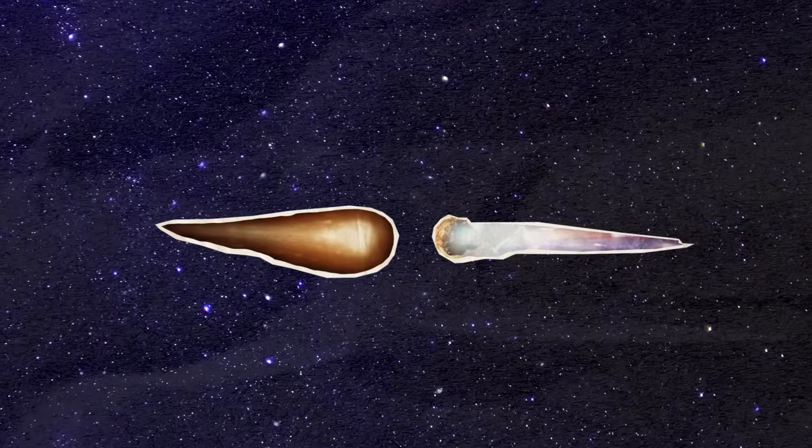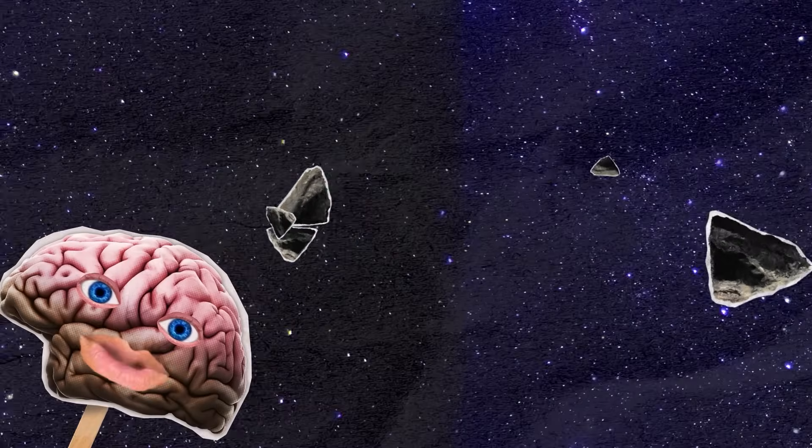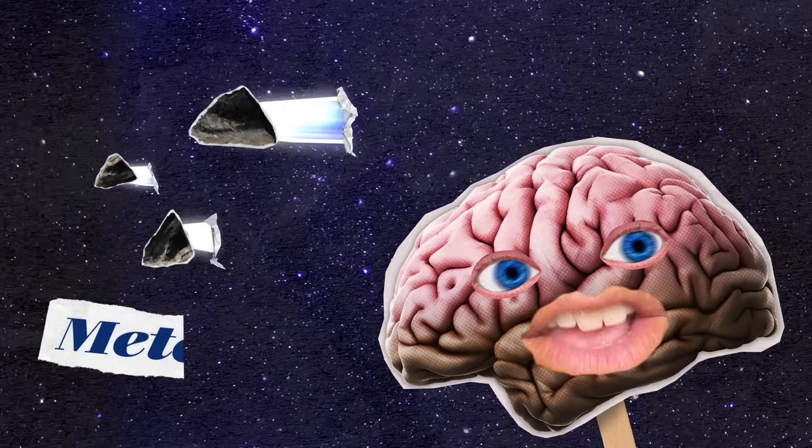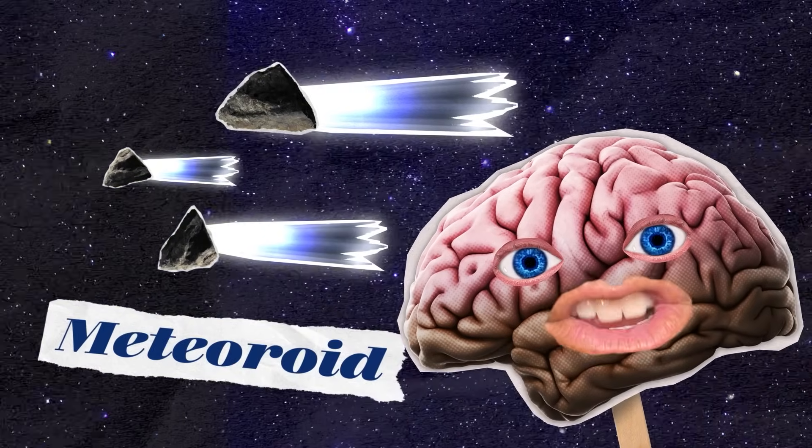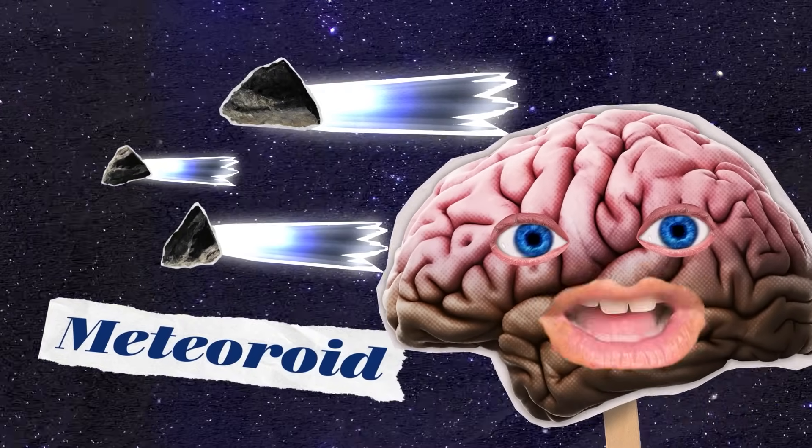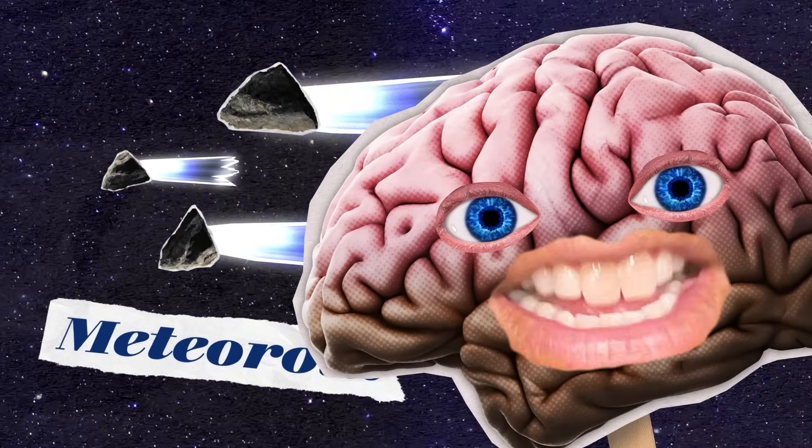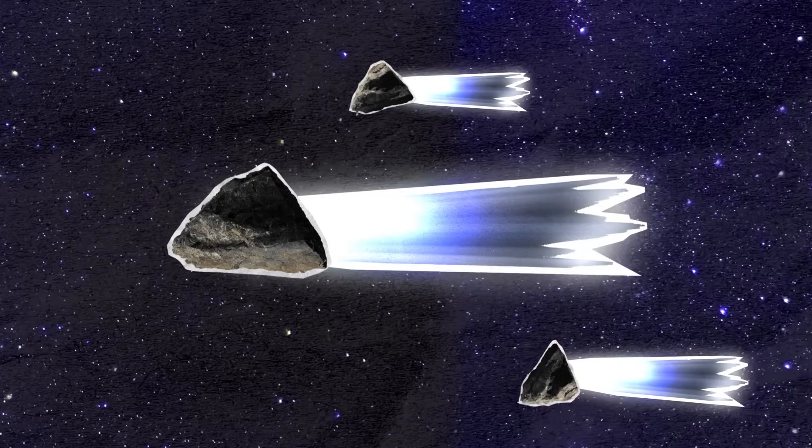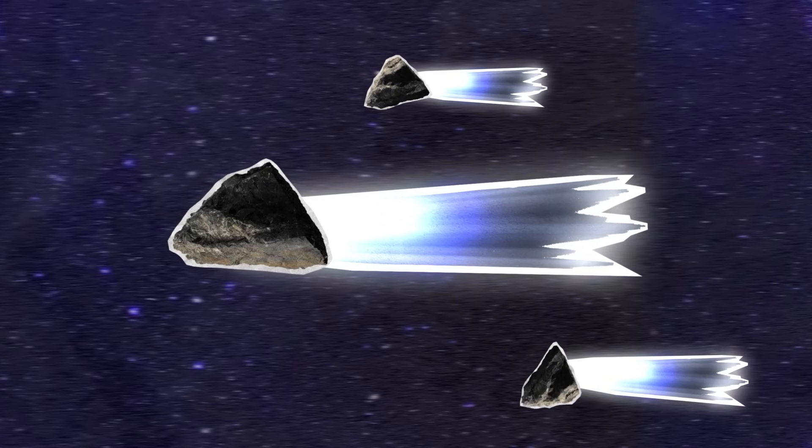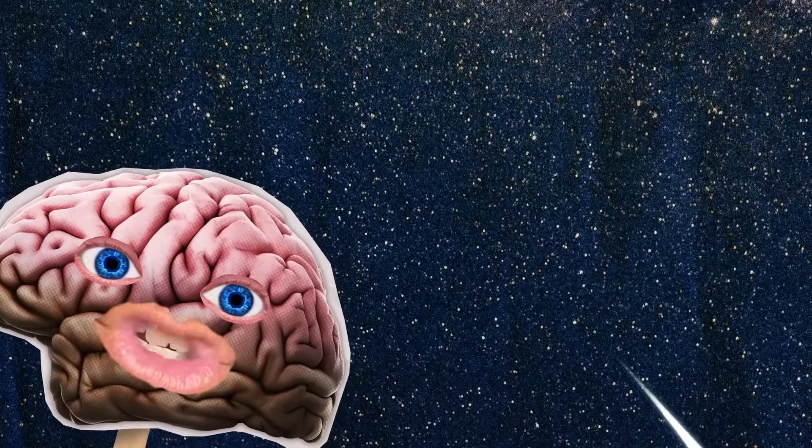And sometimes, they will smash into each other. This causes small pieces of the asteroids and comets to break apart into pieces. Those pieces are called meteoroids, and they are as small as rocks, or even as small as a grain of sand, or even like dust. And often, meteoroids will enter the Earth's atmosphere at insanely fast speeds and burn up, creating a streak of light in the sky.